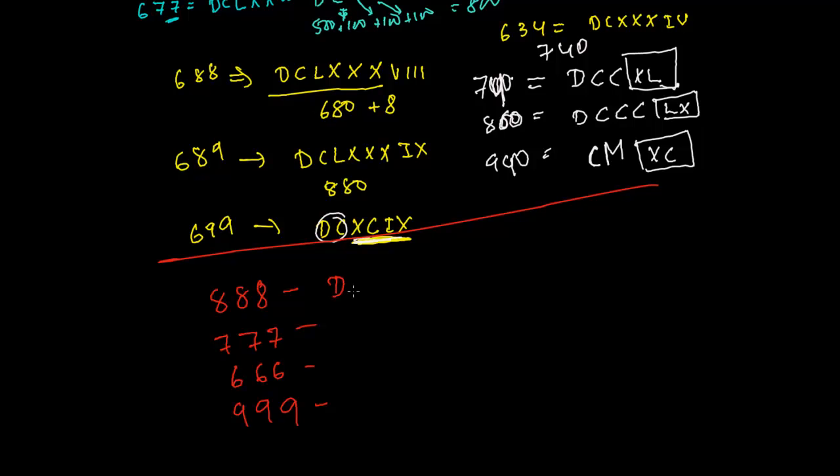You need to write 500, 600, 700, 800, then 50, then 60, 70, 80, and then 5, 6, 7, and 8. How big it is. 500, 600, 700, 800, 850, 860, 870, 880, 885, 886, 887, and 888. DCCCLXXXVIII. Mission accomplished.